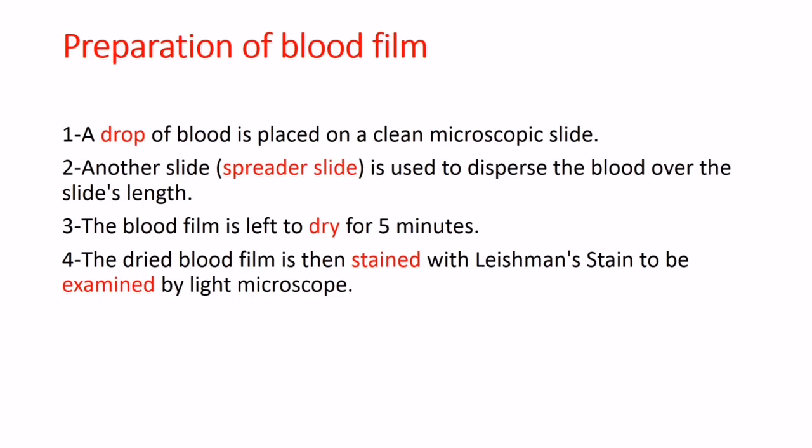Preparation of blood film: A drop of blood is placed on a clean microscopic slide. Another slide is used to spread the blood over the slide's surface. The blood film is left to dry for five minutes, then stained with Leishman's stain to be examined by light microscope.